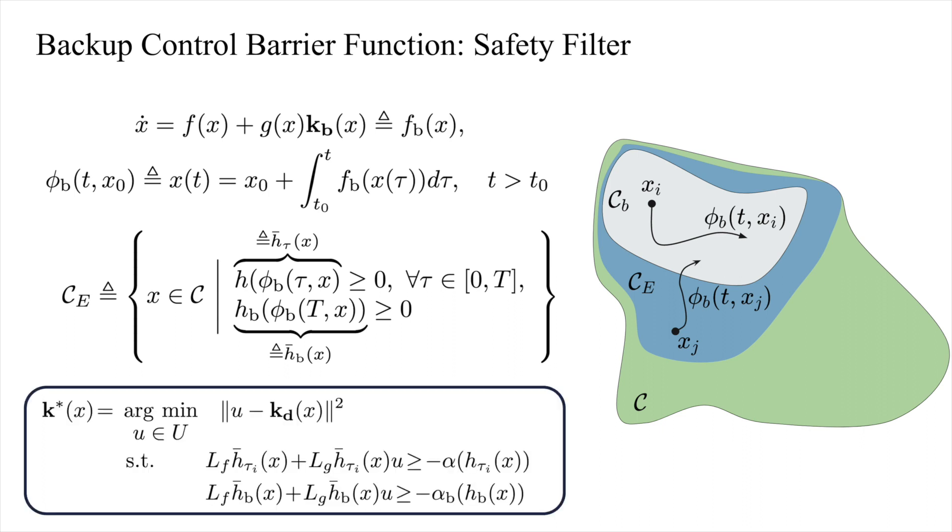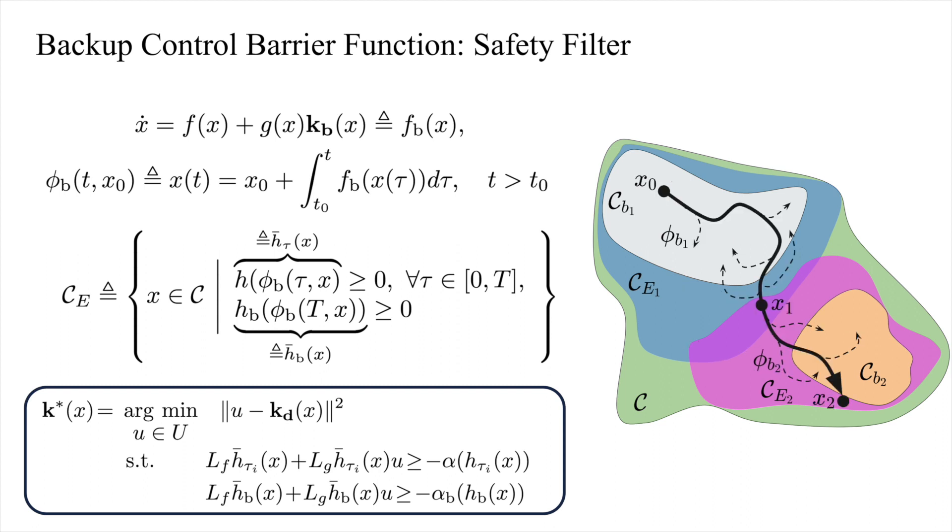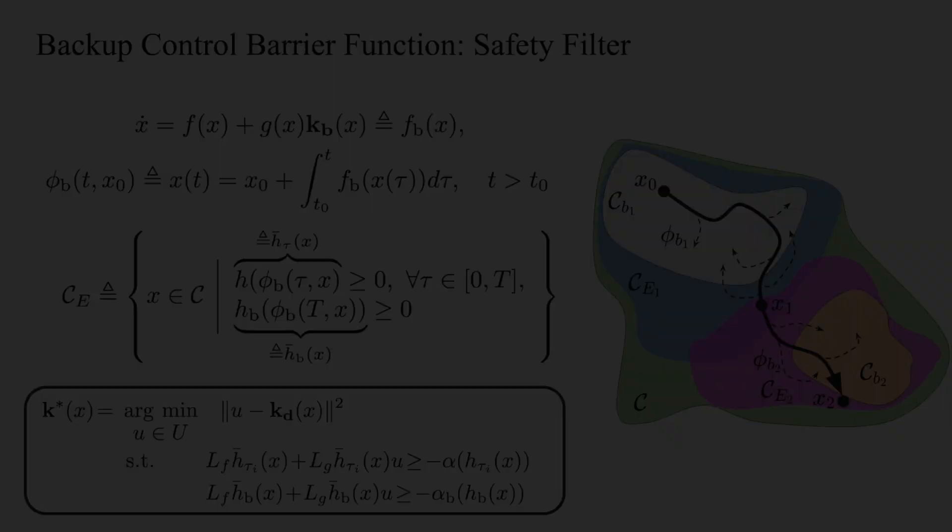Multiple backup controllers can be used to reduce conservativeness by producing new invariant sets, like CE2. If control invariant sets are intersecting, we can potentially travel between them by switching backup controllers at appropriate times, like at point X1, where a switch between the first and second controller is visualized.